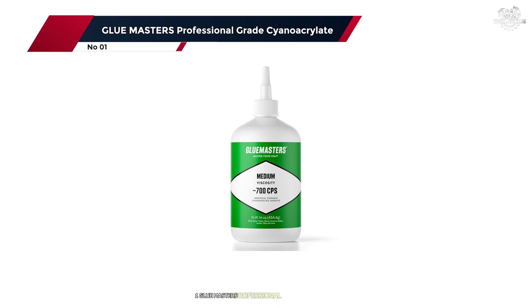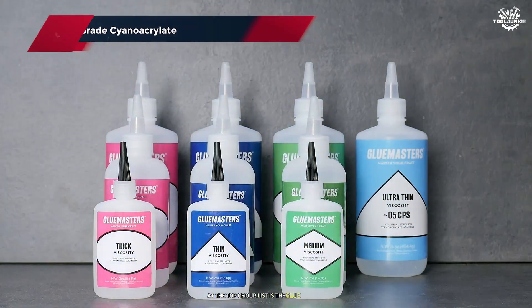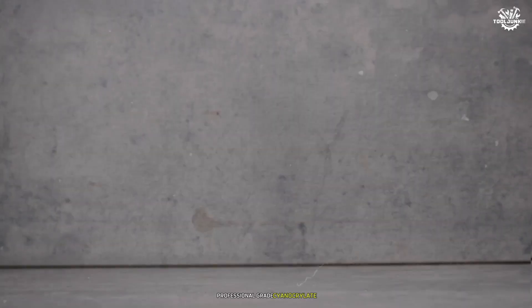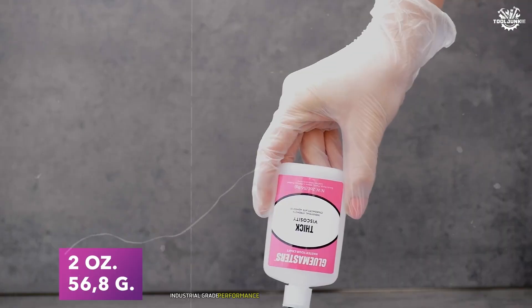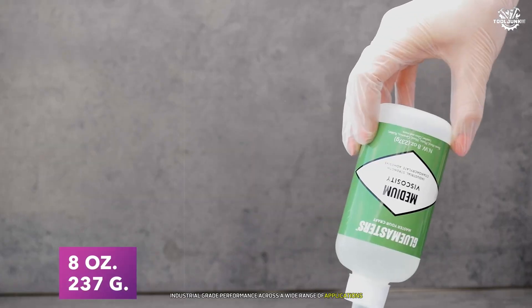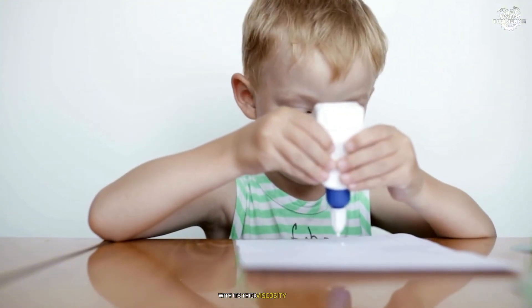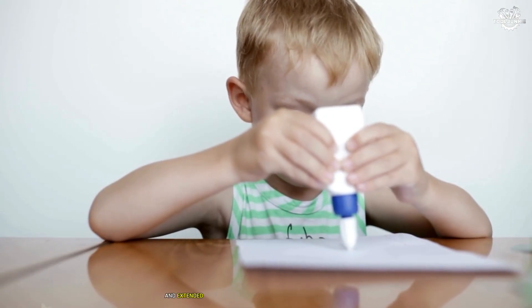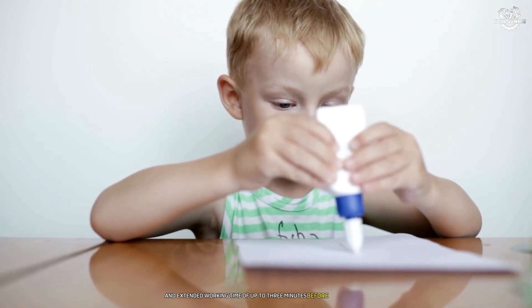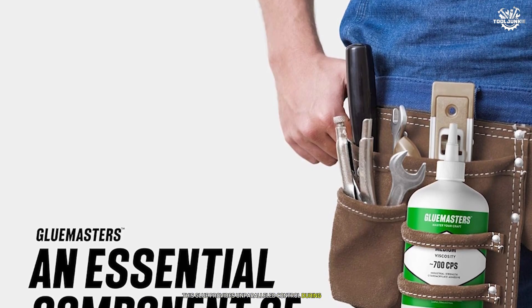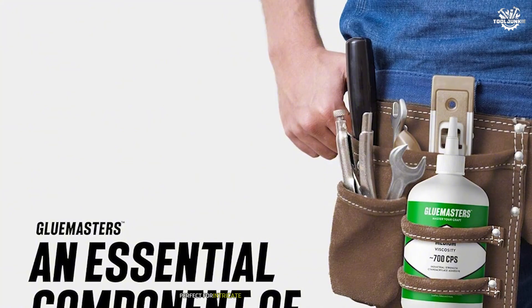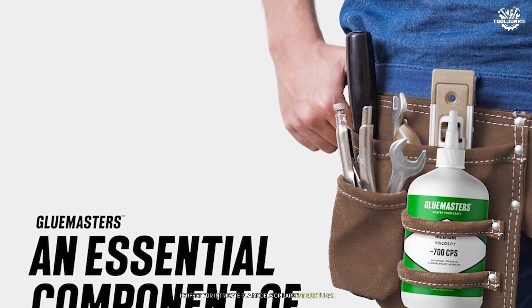Number 1. Glue Master's Professional Grade Cyanoacrylate. At the top of our list is the Glue Master's Professional Grade Cyanoacrylate, a premium adhesive that delivers industrial-grade performance across a wide range of applications. With its thick viscosity, 10,000 cps, and extended working time of up to three minutes before curing begins, this glue provides unparalleled control during assembly, perfect for intricate PLA models or large structural bonds.